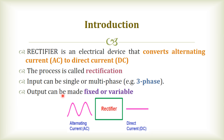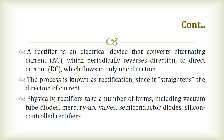The output can be obtained as fixed or variable. Using a rectifier, the alternating current which periodically reverses direction is converted to direct current which flows in only one direction. This process is known as rectification, since it straightens the direction of current.